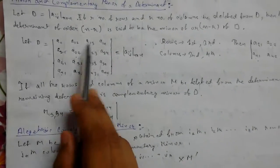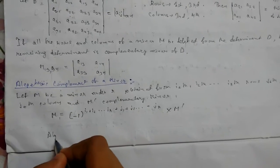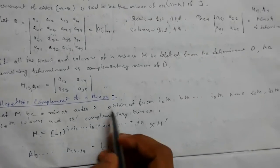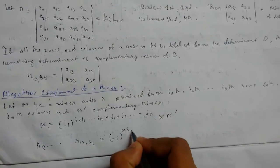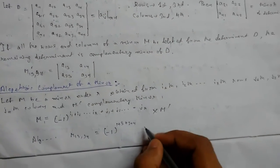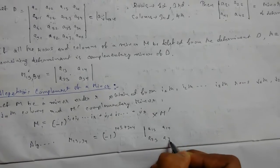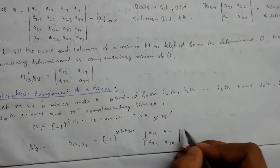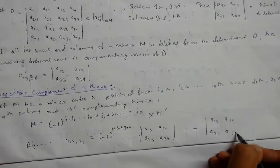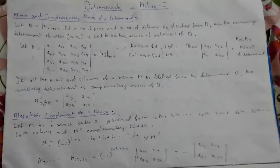Let me illustrate this using the previous example. The algebraic complement of the minor M_13,34 will be (-1)^(1+3+3+4) multiplied by M'. So it equals (-1)^11, which gives us minus one times the complementary minor determinant with elements a13, a14 in the first row and a33, a34 in the second row. So this was the algebraic complement of the minor.